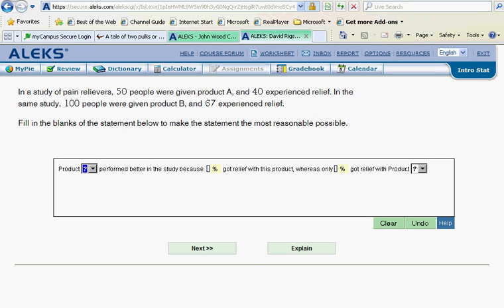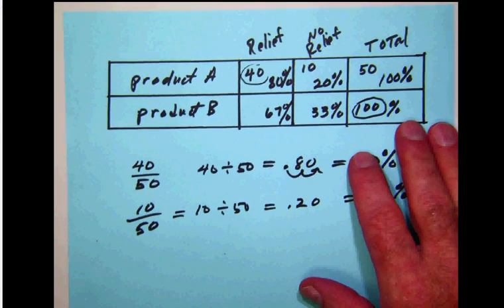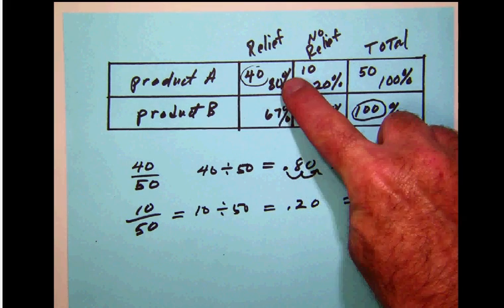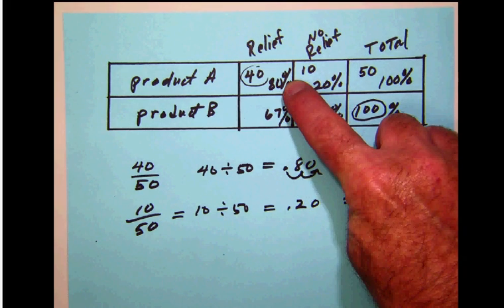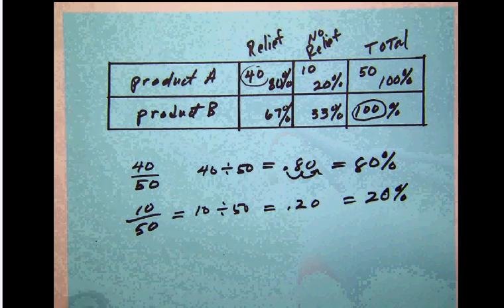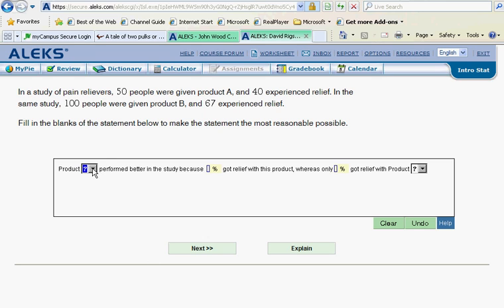Well, performed better must have meant that we have more relief. We can see here that 80% of the people in product A got relief. That's better than 67% for product B. So we could say that product A—and the pull-down gives us that choice.